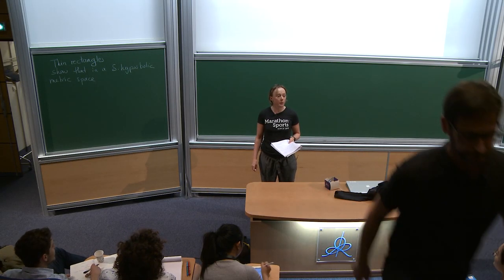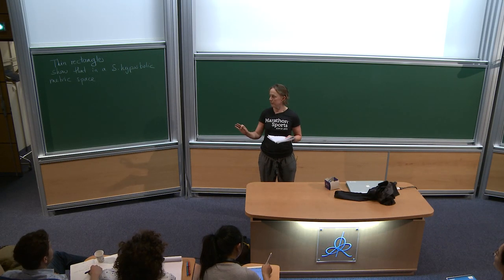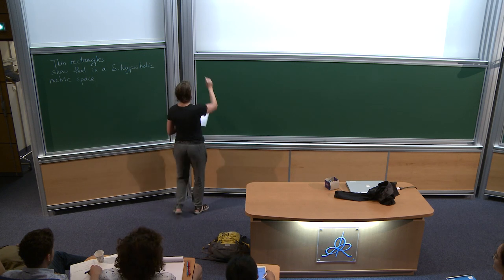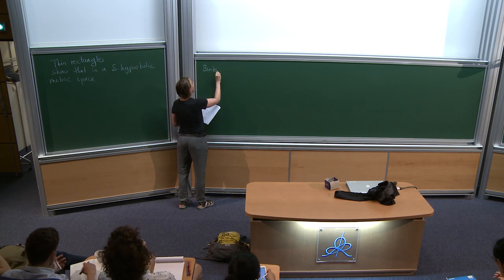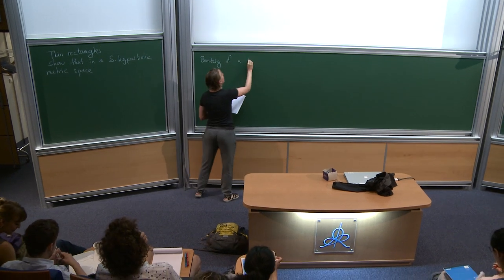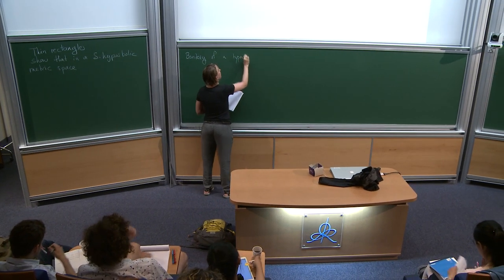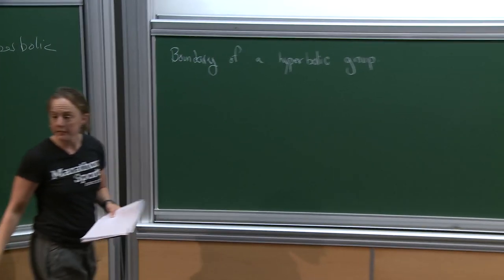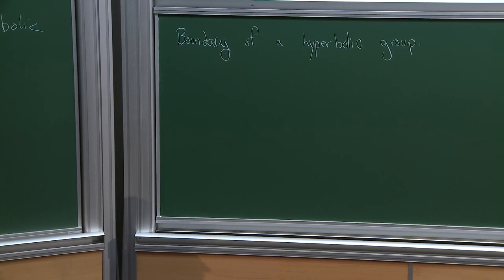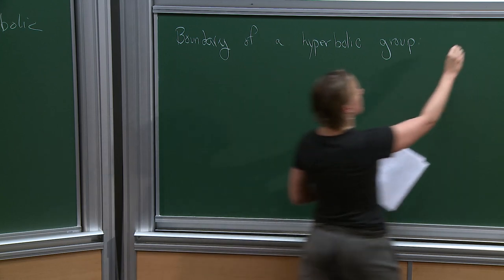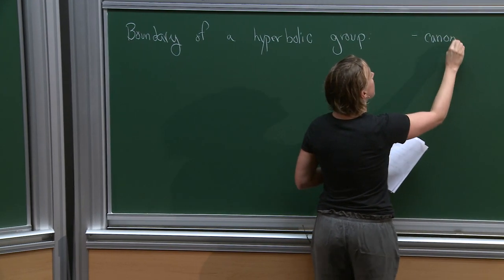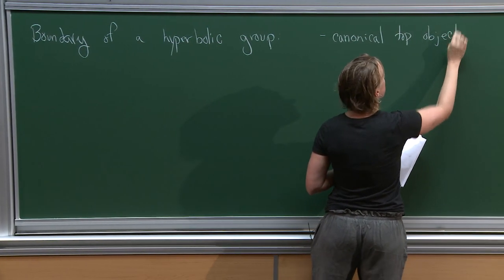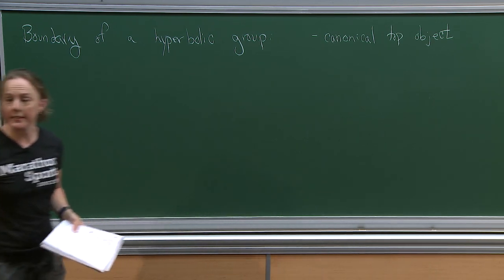I'm going to overlap a little bit with what Francoise said, just to review and get us all on the same page. So the boundary of a hyperbolic group is a topological object that's going to be canonically associated with a hyperbolic group and it's going to tell us a lot of information. I'm going to show that this is a canonical topological object — it actually also has a metric structure, which I won't go into today.